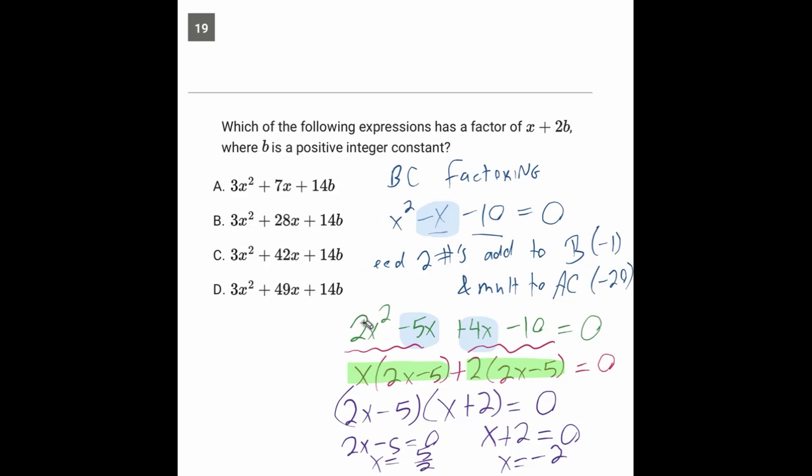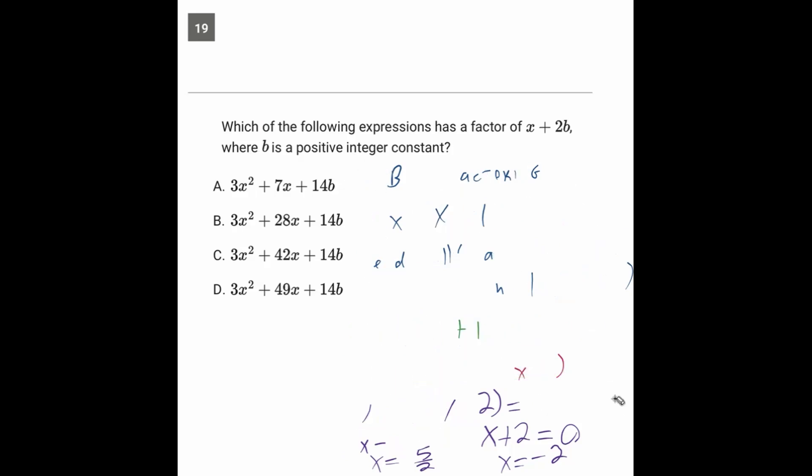Let's find out how it applies in this crazy situation here. So here in this situation, one of the two factors is x plus 2b. The other factor has to start with a 3, because notice that all the answer choices, if we were to foil them out, they would foil out to 3x squared.